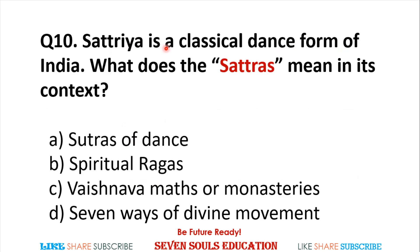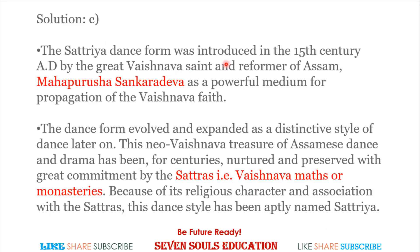Last question: Satriya is a classical dance form of India. What does 'Satras' mean in its context? Options: sutras of dance, spiritual ragas, vaishnavite monasteries, or seven ways of divine movement. The answer is vaishnavite monasteries. The Satriya dance form was introduced in the 15th century by the Vaishnavite saint of Assam, Mahapurush Shankardev. The dance evolved as a distinctive style, nurtured and preserved by the Satras — vaishnavite monasteries of Assam.